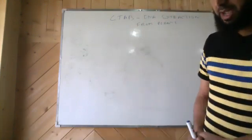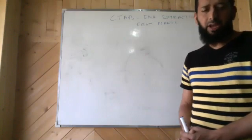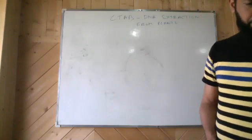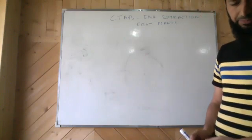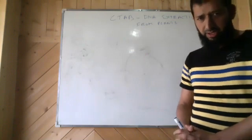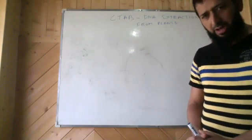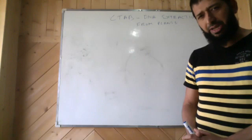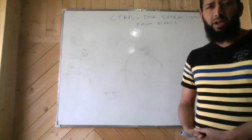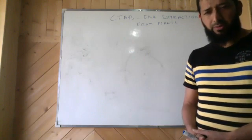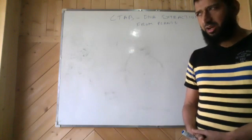This is called CTAB. CTAB stands for cetyl trimethyl ammonium bromide. This is a chemical that forms a complex with DNA and helps in extracting DNA from the stuff that comes out of a cell once it is digested or lysed.